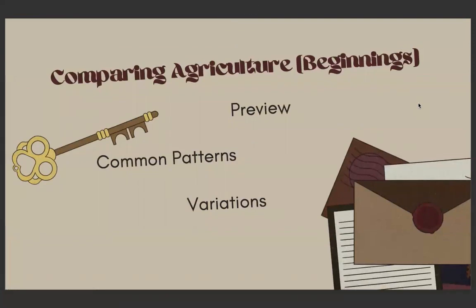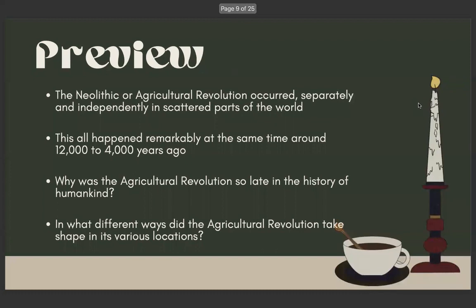Next, we'll be going over comparing agriculture in the beginnings. We'll be going over the preview, common patterns, and variations. The Neolithic or agricultural revolution occurred separately and independently in scattered parts of the world. This all happened remarkably at the same time, around 12,000 to 4,000 years ago. Why was the agricultural revolution so late in the history of humankind? In what different ways did the agricultural revolution take shape in its various locations?